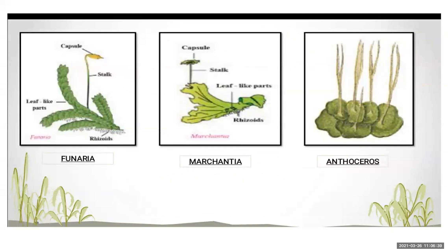Looking at pictures: Funaria shows a green leaf-like part; at the base are root-like rhizoids. From the leaf-like part, a stalk arises and a capsule is formed. Marchantia also has a flat body, leaf-like parts, rhizoids, a stalk, and a capsule. Anthoceros similarly has leaf-like parts and capsules at the top with stalks. The most common examples of Bryophyta are Funaria, Marchantia, Anthoceros, and Riccia.